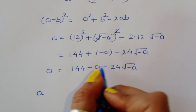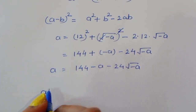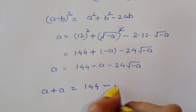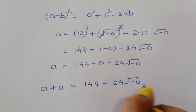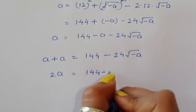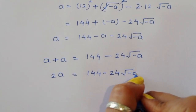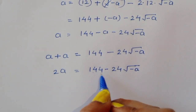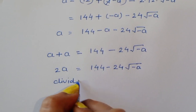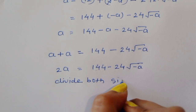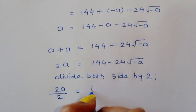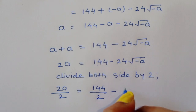The −a term moves to the left-hand side and becomes +a, so a + a = 144 − 24√(−a), giving 2a = 144 − 24√(−a). We divide both sides by 2.